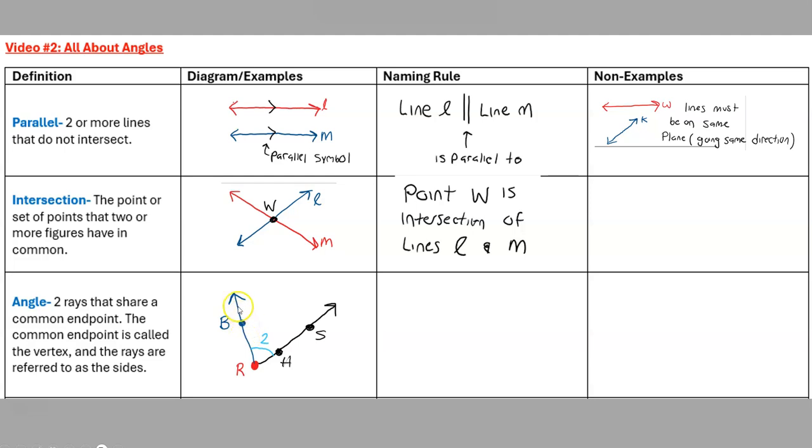You'll see that I have ray RB here on the screen. It starts at R, goes in the direction of B, and then my other ray is R and then you can either call it RH or RS, this black ray going this direction. Notice that they both have a common endpoint R, and this common endpoint we're going to be calling that our vertex. The rays are going to be referred to as our sides. So RB is a side and RS is going to be a side.